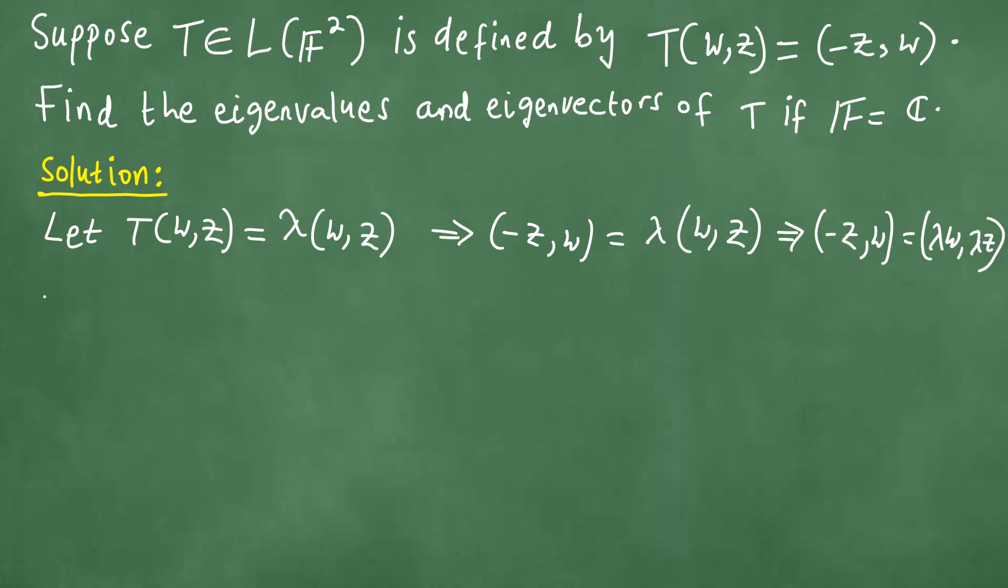From that we're able to see. This implies that -z = λw and w = λz. If we call this equation 1 and this equation 2, we can proceed.